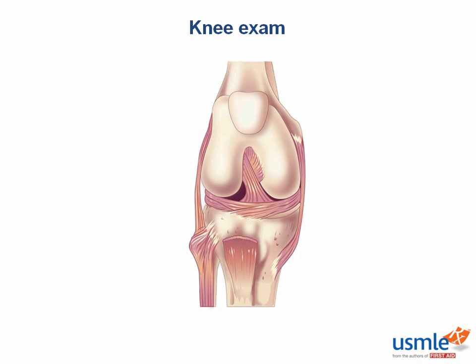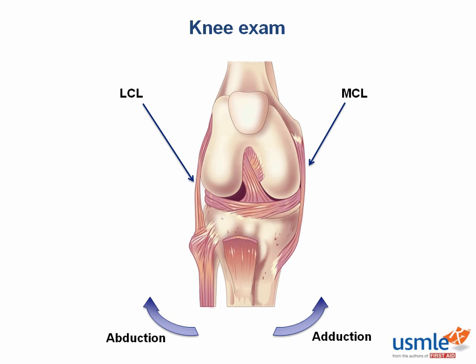Now let's move on to the periphery of the knee on the lateral and medial sides. On the medial side, opposite the fibula, we have the medial collateral ligament, or the MCL. On the lateral side, we have the lateral collateral ligament. These ligaments prevent abnormal tibia abduction or adduction. One way to remember: abduction is like being abducted — moving away from midline. Adduction is just the opposite, moving toward midline.